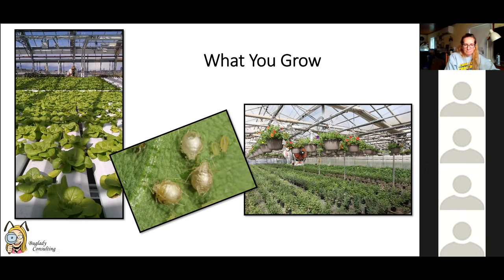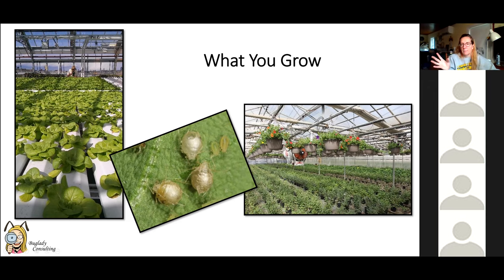What you grow also matters. For aphid management in hydroponic lettuce versus floriculture, parasitic wasps like Aphidius colemani and Aphidius ervi fly around laying eggs in aphids, creating brown mummies. In a hanging basket or on a landscape shrub, mummies here and there aren't the end of the world. But if you're doing lettuce that goes into someone's salad, that's a problem — people don't want mummies in their food crops. So your crop type directly influences which beneficials are right for you.